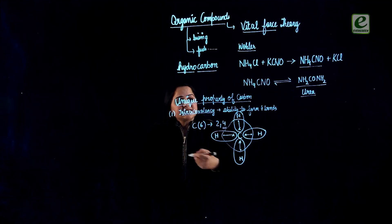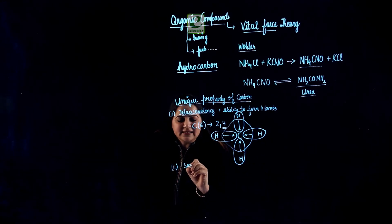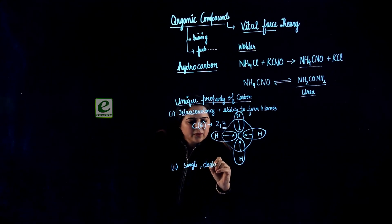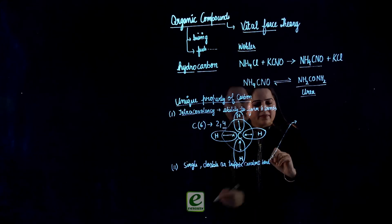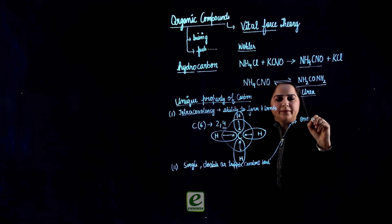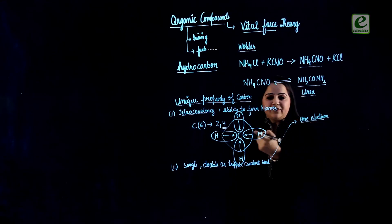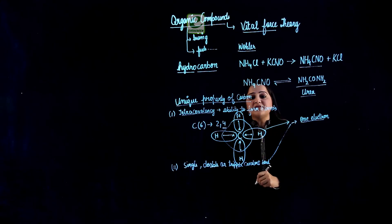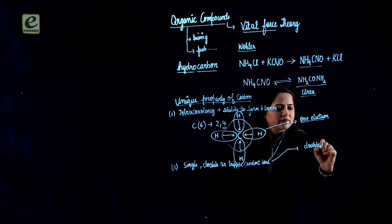This can further be explained by the ability to form single, double, or triple covalent bonds. If carbon shares one electron with another atom, it forms a single bond — like in the methane structure, this represents the sharing of single bonds.